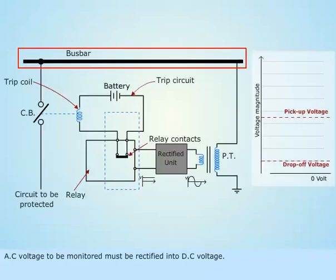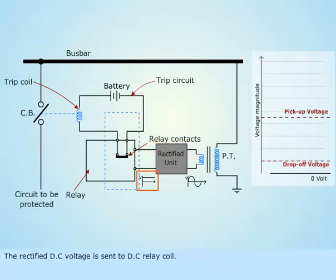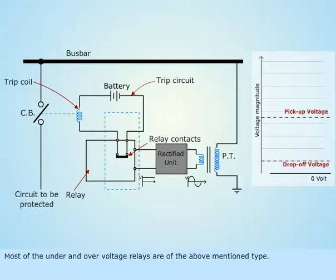The AC voltage to be monitored must be rectified into DC voltage. The rectified DC voltage is then sent to the DC relay coil. Most under and over voltage relays are of this type.